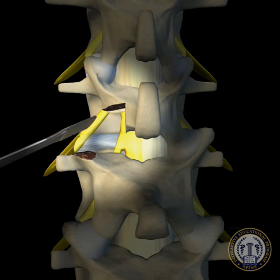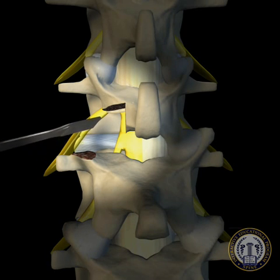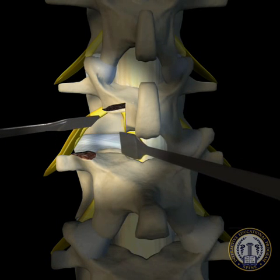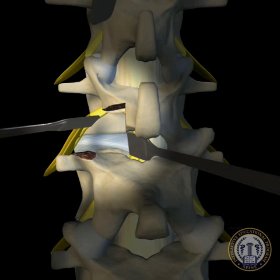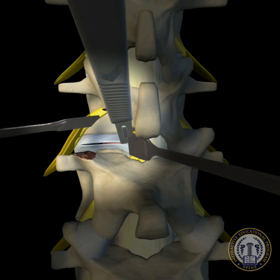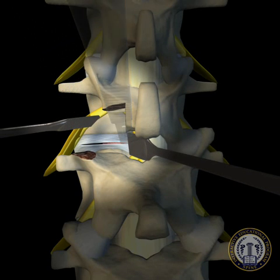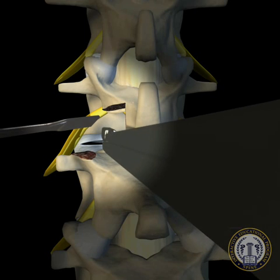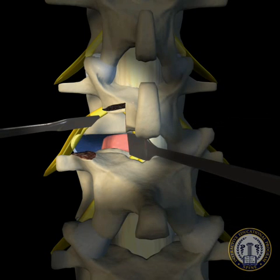With the traversing and exiting nerve roots protected, a complete discectomy is now performed using a number 15 blade to incise the annulus and thoroughly remove all nuclear material. The success of the fusion is dependent on thorough removal of all nuclear tissue, so time should be taken to visualize a complete and thorough discectomy.